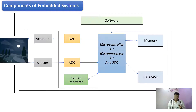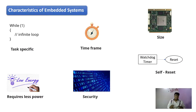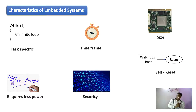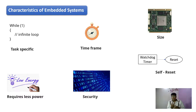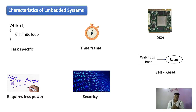Now let's look at the various characteristics of embedded systems. One characteristic is being task-specific — embedded systems must run continuously forever in a loop and must not stop at any time. The second characteristic is timeframe. Real-time embedded systems must meet their time deadlines, and if they fail to do so, the system is said to have failed, since they have strict timing constraints.